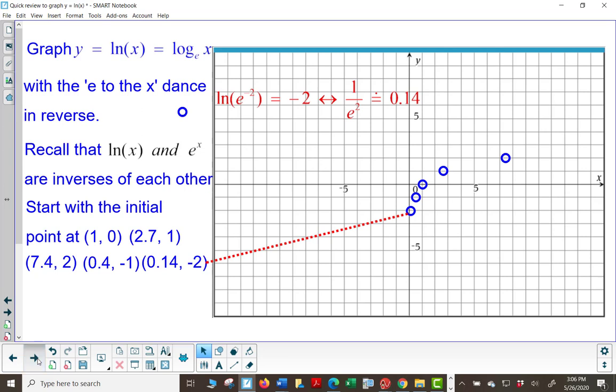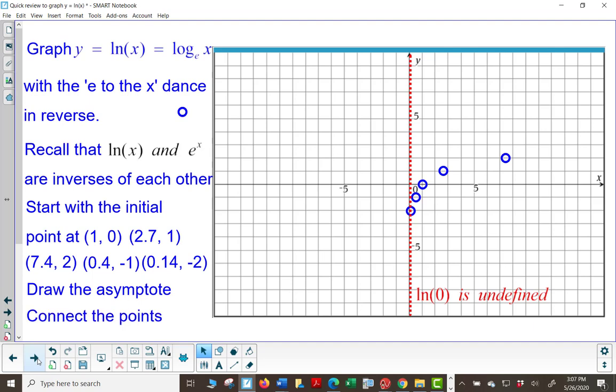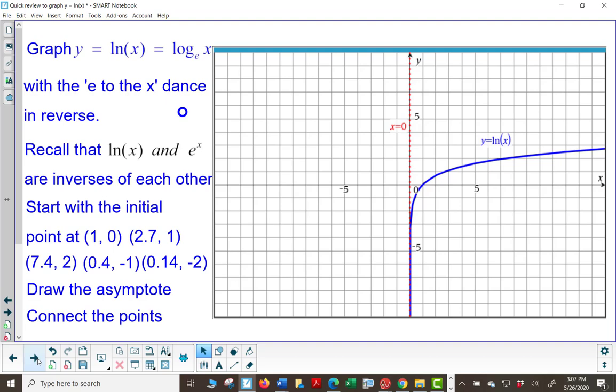So those are our five key points. The asymptote will be the y-axis, the boundary line. And because natural log of 0 is undefined and connecting the points, we get that nice smooth continuous curve.